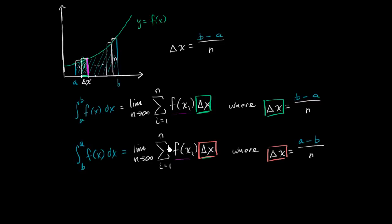And everything else is the same. So what am I going to end up doing? Well, I'm essentially going to end up having the negative value of this. So this is going to be equal to the negative of the integral from a to b of f of x dx.